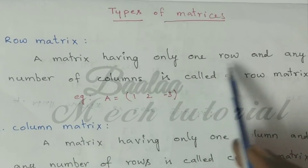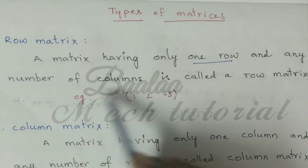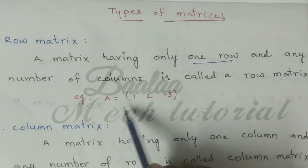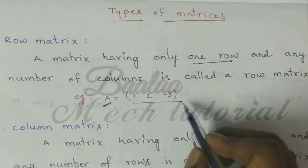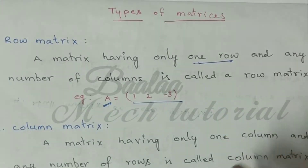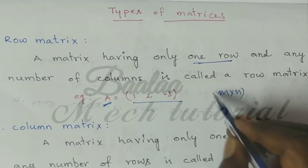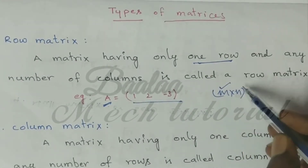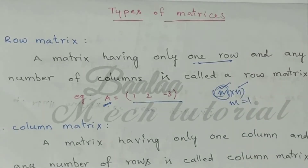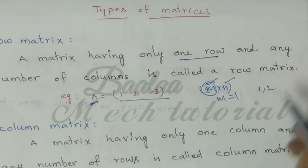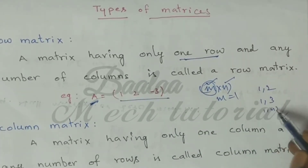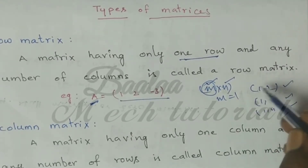First one is row matrix. A matrix having only one row and any number of columns is called a row matrix. For example, a 1 by 3 matrix or 1 by 4 matrix. The condition is that m equals 1.